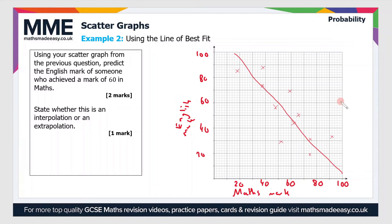Now I need to use our line to predict the English mark of someone who achieved a mark of 60 in maths. Let's go to 60 in maths and draw a straight line up until we hit the y-axis. That's the English mark, and you can see that corresponds to an English mark of 48.